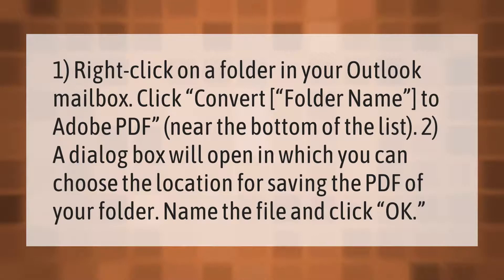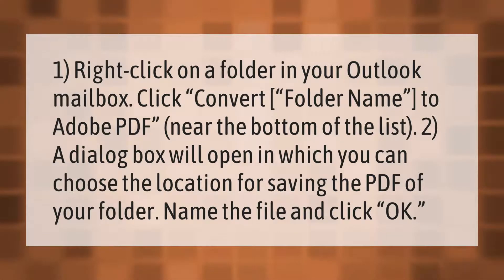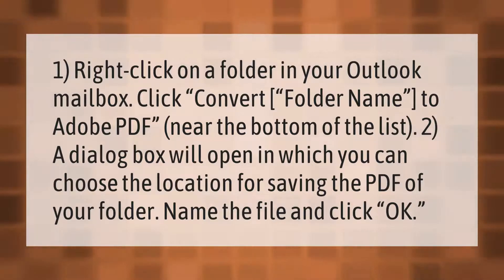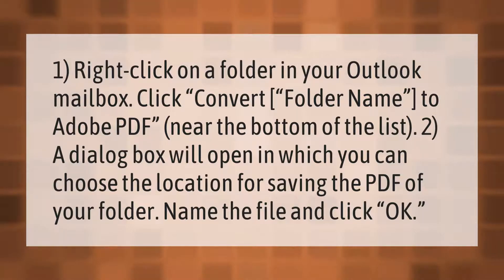Right-click on a folder in your Outlook mailbox and click Convert Folder Name to Adobe PDF near the bottom of the list. A dialog box will open in which you can choose the location for saving the PDF of your folder. Name the file and click OK.